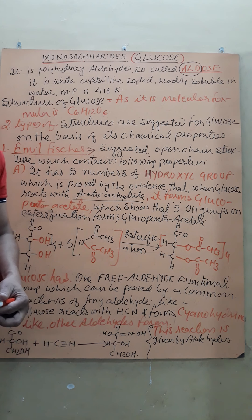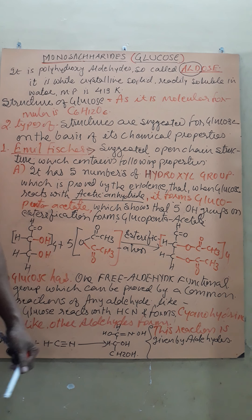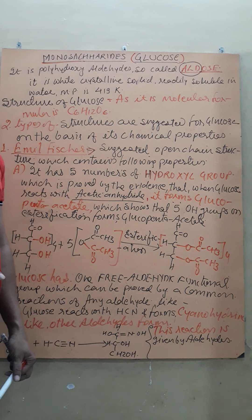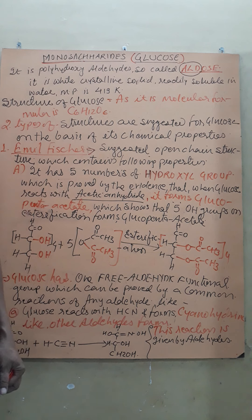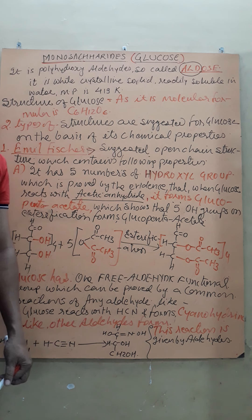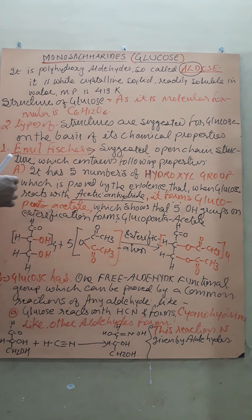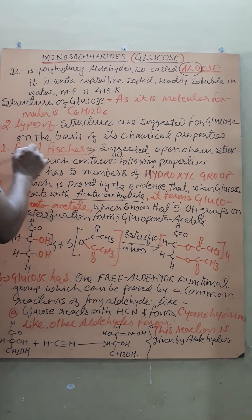Glucose gives a number of chemical reactions, and on the basis of these reactions, two scientists suggested two different types of structures for glucose. Its molecular formula is C6H12O6, and it contains an aldehyde functional group along with a high number of hydroxyl groups.